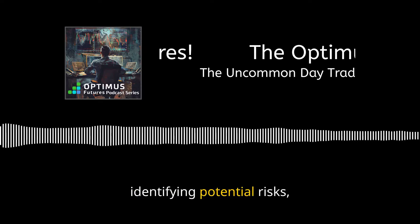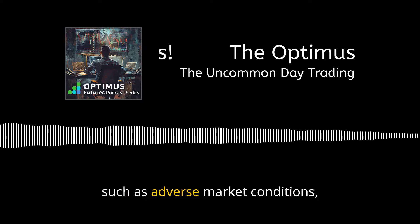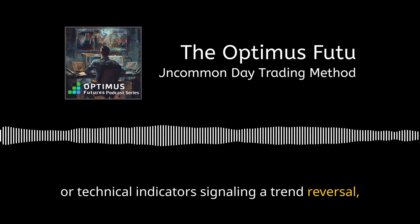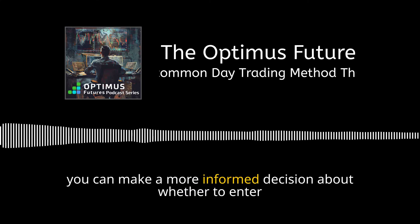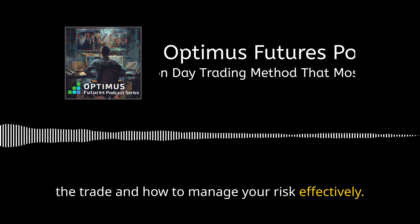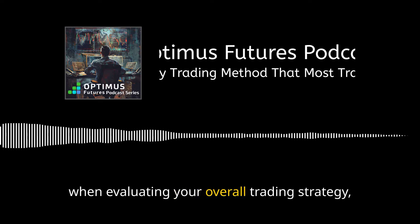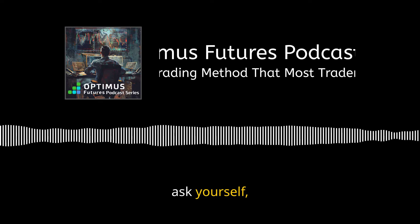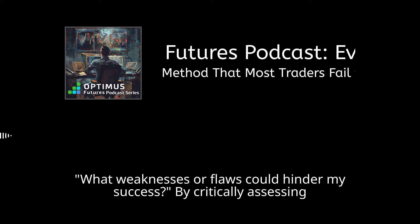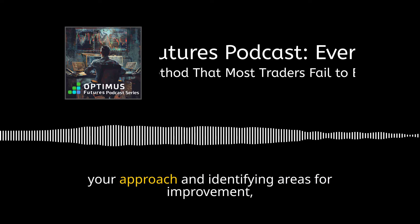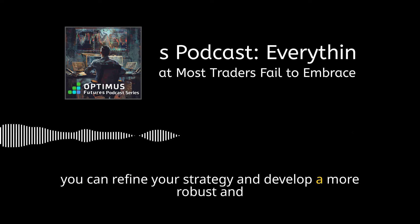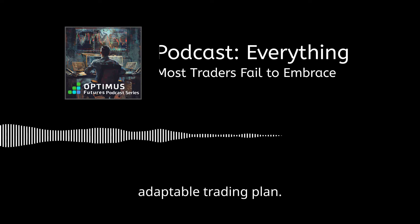By identifying potential risks, such as adverse market conditions, economic events, or technical indicators signaling a trend reversal, you can make a more informed decision about whether to enter the trade and how to manage your risk effectively. Similarly, when evaluating your overall trading strategy, ask yourself, 'What weaknesses or flaws could hinder my success?' By critically assessing your approach and identifying areas for improvement, you can refine your strategy and develop a more robust and adaptable trading plan.